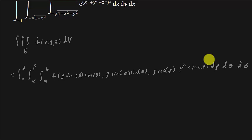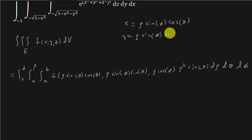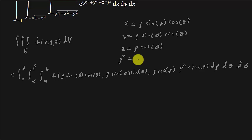You can see that ρ is between a and b, θ is between alpha and beta, and φ is between c and d. We also know that x = ρ sinφ cosθ, y = ρ sinφ sinθ, z = ρ cosφ, and ρ² = x² + y² + z².